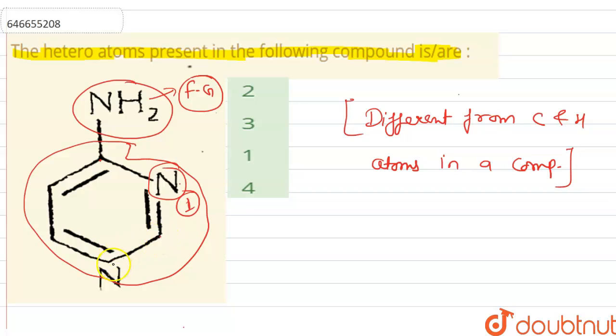And further, when we go to the next carbon, we observe another hetero atom, that is nitrogen. So there are only two hetero atoms present in this compound. This functional group is not behaving as a hetero atom because it is a functional group.